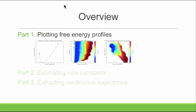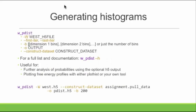Let's start with some free energy profiles. This is going to be a first one-dimensional free energy surface — a free energy profile. This is an evolution over the weighted ensemble iterations, and this is a two-dimensional one. The first one is averaged, the second one is as a function of weighted ensemble iterations, and the last one is averaged over a certain iteration window of two dimensions.